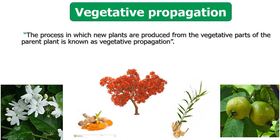What is vegetative propagation? The process in which new plants are produced from the vegetative parts of the parent plant is known as vegetative propagation. Here some of the plant parts like stem, leaves or roots help in creation of new plants. The other name for vegetative propagation is vegetative reproduction.